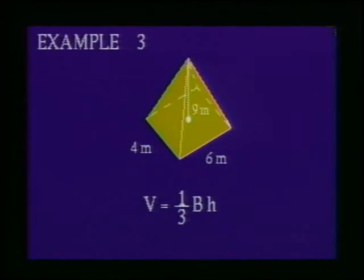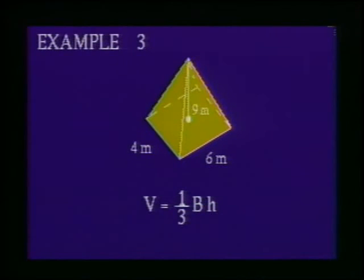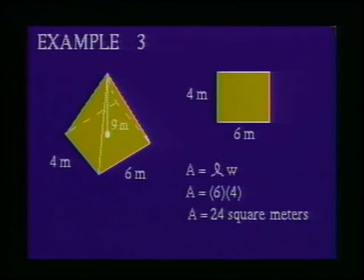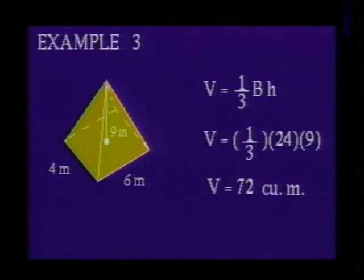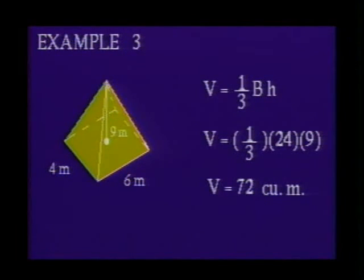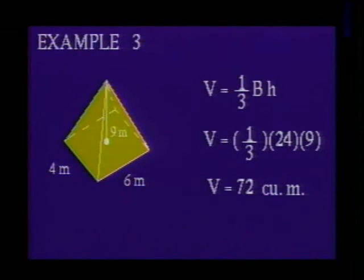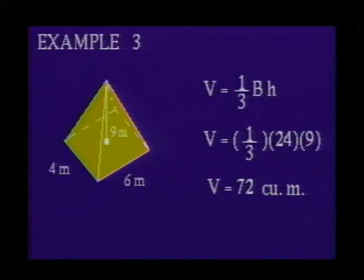Example 3: What is the volume of a rectangular pyramid whose base measures 6 meters by 4 meters and whose altitude is 9 meters? To calculate the volume of a pyramid, we use the formula V = one-third times B × H, where capital B is the area of the base and H is the height. Before using this formula, we must find the area of the base by multiplying the length by the width, which gives us 24 square meters. Substituting 24 for the area of the base and 9 for the height, we have V = one-third times 24 times 9. The volume of the rectangular pyramid is 72 cubic meters.